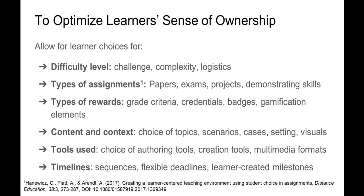So how can we optimize students' sense of ownership? Where it makes sense, we can build in opportunities for student choice. One way is to let them choose the difficulty of an activity or assignment. This doesn't necessarily mean providing an easy option — a big focus of UDL is finding ways to challenge gifted students and keep them engaged. Other factors like complexity or logistical overhead might make an assignment more or less difficult, and you can leave some of those aspects up to student choice.